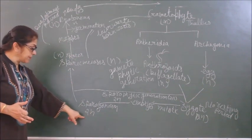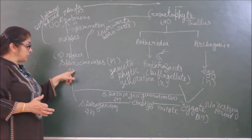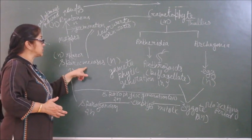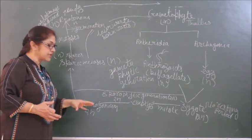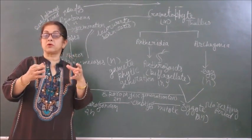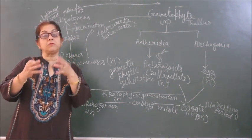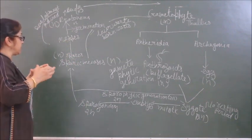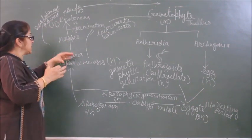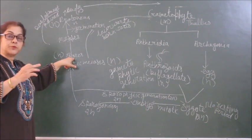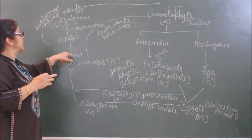Sporogonium is a diploid stage. After maturity, it has spore sac-like structure in which sporic meiosis will occur. Some cells will have reproductive power in which meiotic division will occur. Such spores are called meiospores in which meiotic division occurs. And after meiotic division, spore mother cells will give rise to haploid spores.